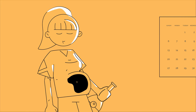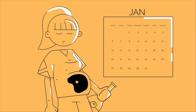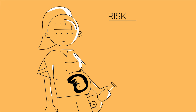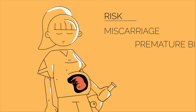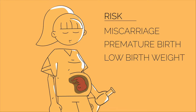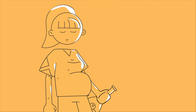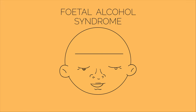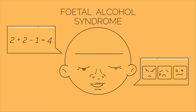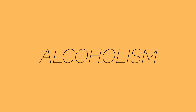Heavy drinking can cause heavy and irregular periods in women and also affect fertility in both sexes. Drinking alcohol during pregnancy can have consequences for the fetus. Drinking alcohol, especially in the first three months of pregnancy, increases the risk of miscarriage, premature birth and low birth weight. Drinking heavily throughout pregnancy can cause the baby to develop a serious condition called fetal alcohol syndrome.